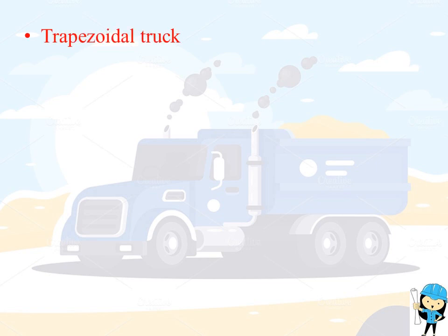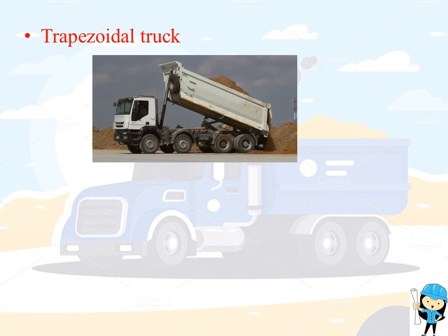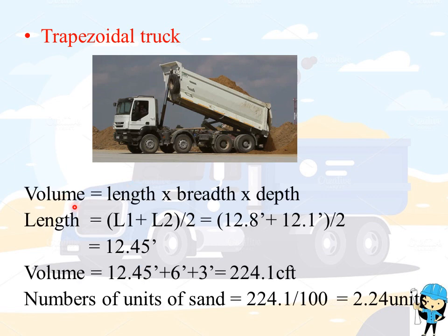The third method is the trapezoidal truck. In a trapezoidal truck, the length will be varying — taken as L1 and L2 — along with the depth and breadth. The volume equals length into breadth into depth, where the length is L1 plus L2 divided by 2. The top length is L1 and the bottom length is L2. This gives an average length of 12.45 feet. Volume equals 224.1 CFT. Therefore, the number of units of sand equals 224.1 divided by 100, which is 2.24 units of sand.